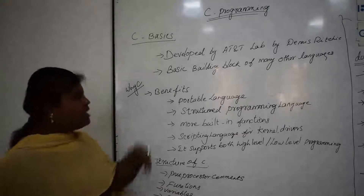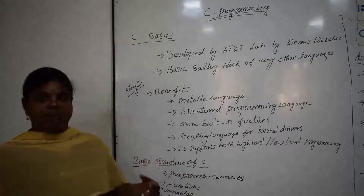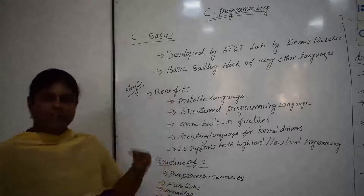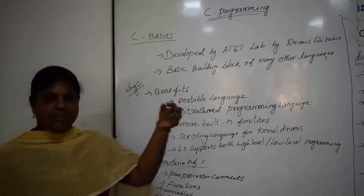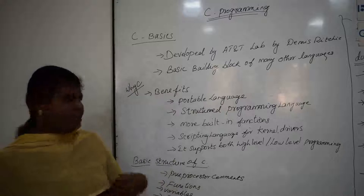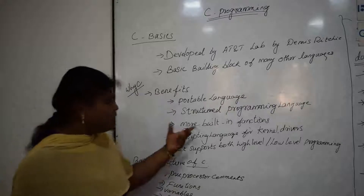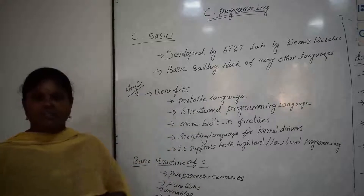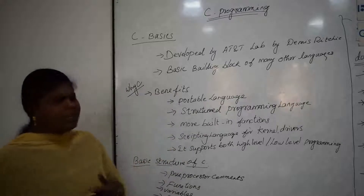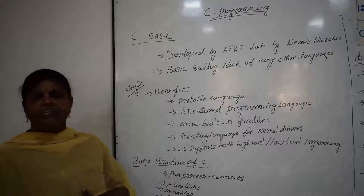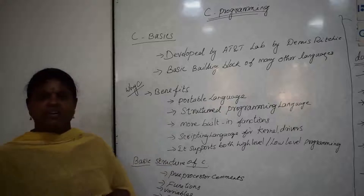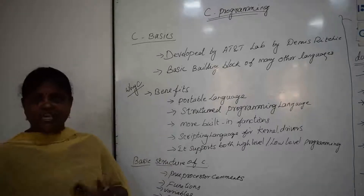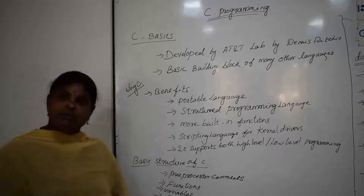C is a structured programming language — there is a starting line and an ending, and we maintain the same order. There are many built-in functions, and there are more than 32 keywords available to use.